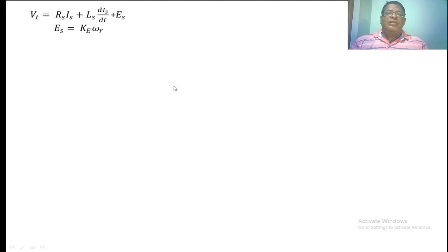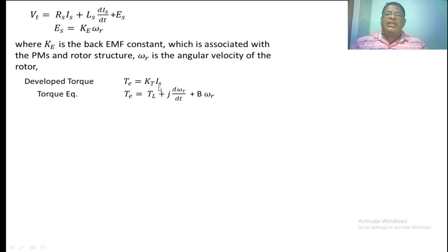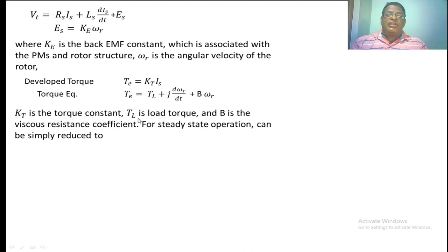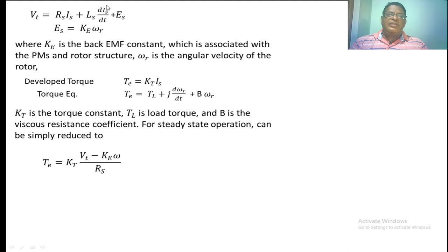In a BLDC motor, the back-EMF in the stator winding is highly dependent upon the angular velocity of the rotor, where KE is the back-EMF constant, which depends upon the permanent magnets of the motor. The torque developed in a BLDC motor depends upon the stator current, since the flux is constant and is taken into consideration as KT, the torque constant. The output torque equals load torque plus J·d(ωR)/dt plus B·ωR, where TL is load torque, B is the viscous coefficient, and J is the moment of inertia.